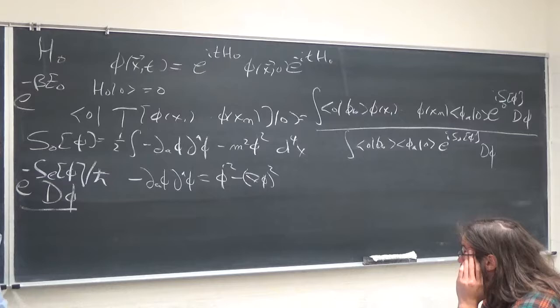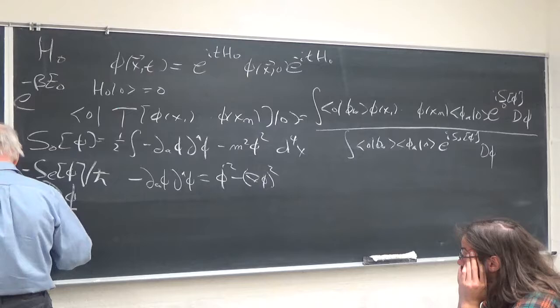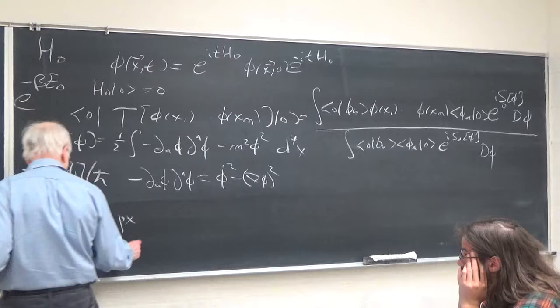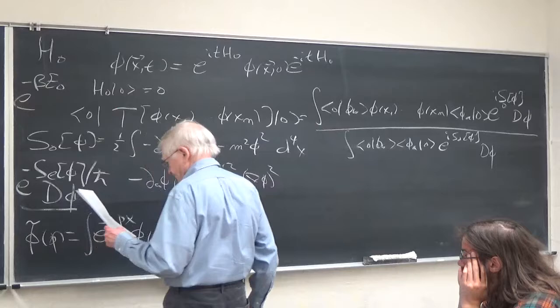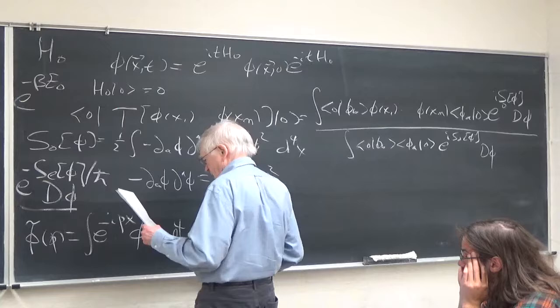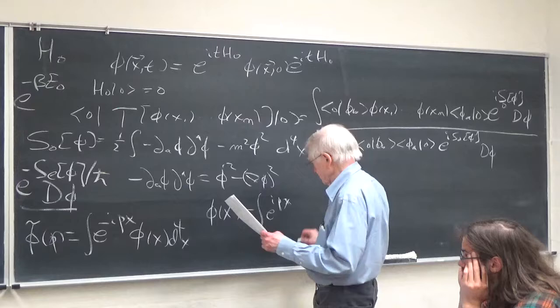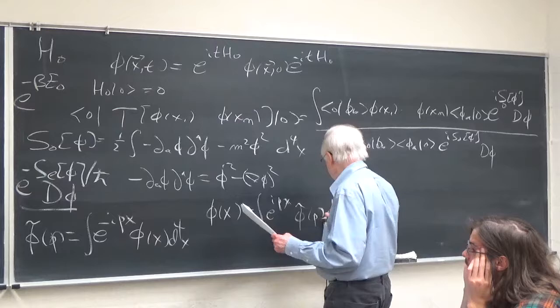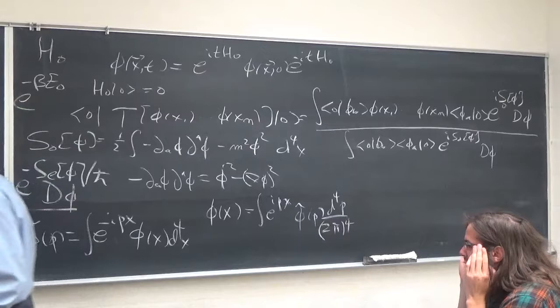In particular, S_0[phi] equals one-half integral of minus ∂_A phi ∂^A phi minus m² phi² d⁴x, where minus ∂_A phi ∂^A phi equals phi-dot squared minus grad phi squared. We can define four-dimensional Fourier transforms: phi-tilde(p) equals the integral of e to the minus ipx times phi(x) d⁴x, and consequently the inverse transform is phi(x) equals the integral of e to the ipx times phi-tilde(p) d⁴p over (2π)⁴.